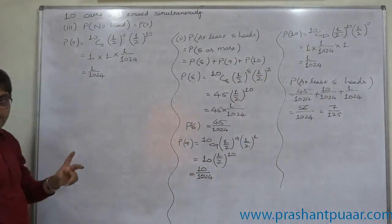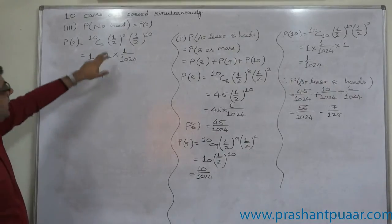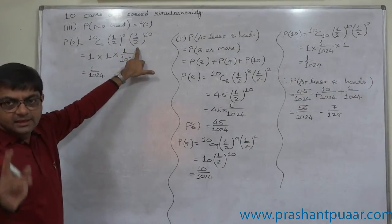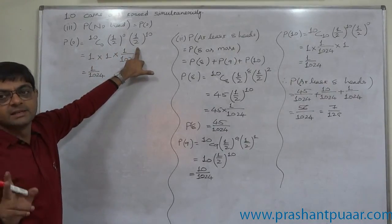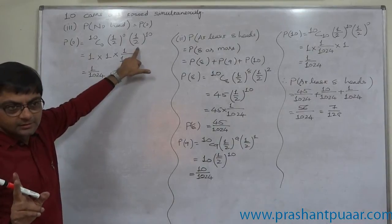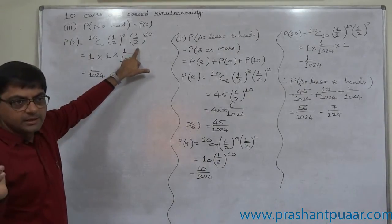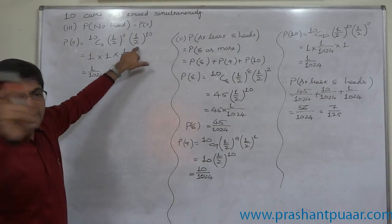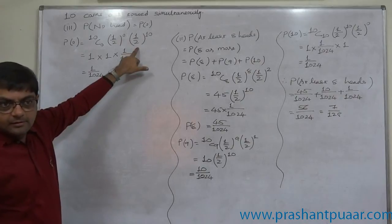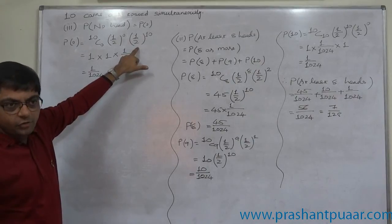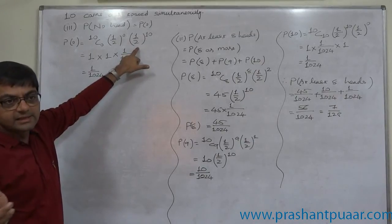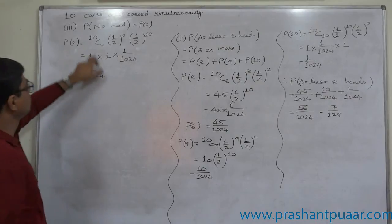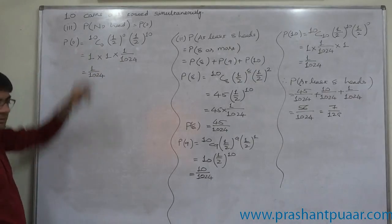Since p equals q equals 1/2, this is a case of symmetric distribution. The first and last probabilities are always the same. The second and the probability before last are always the same, and so on — because of the rule of combination.